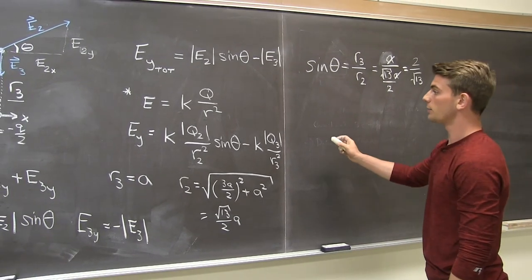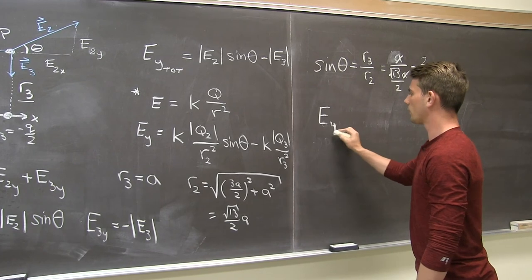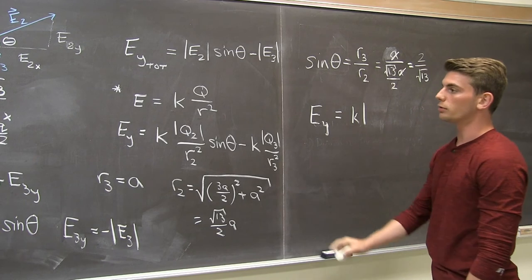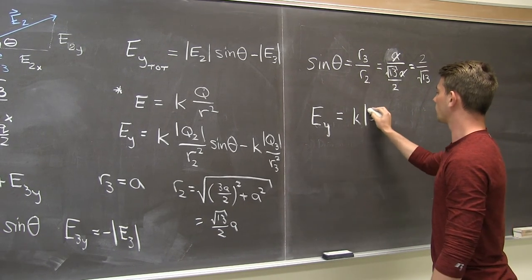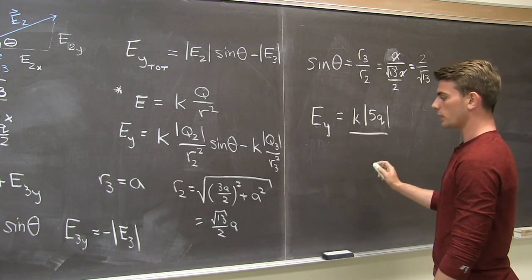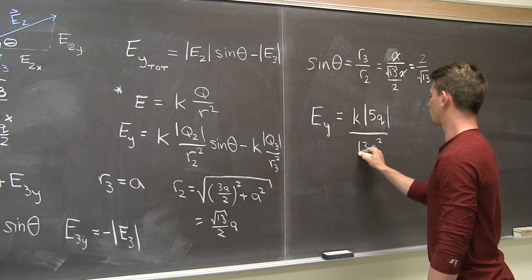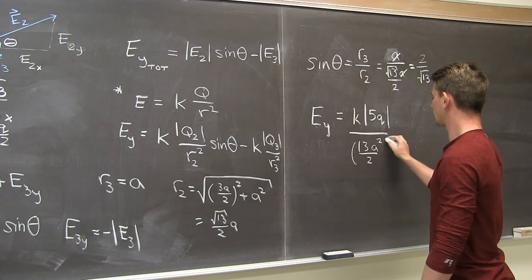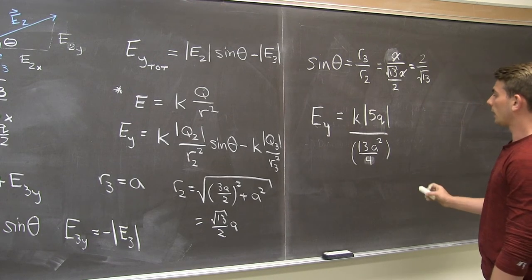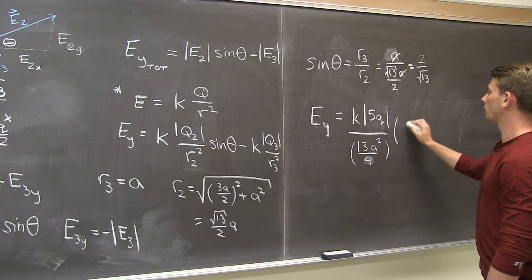Now plugging all of this back in, we reach our grand finale. Ey is going to be k times q2 which is just 5q, all over r2 squared which is just going to be 13 a squared over 4, and then times sine of theta which we found was just 2 over the square root of 13.